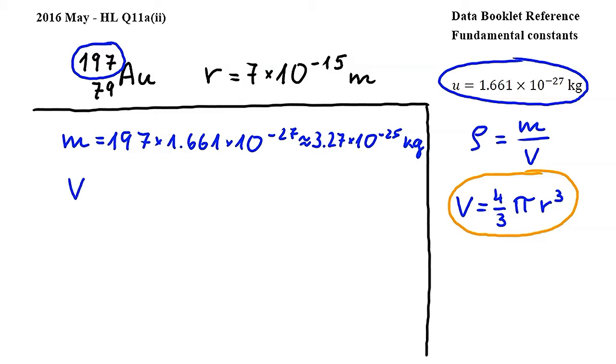Substituting we get V is equal to 4 over 3 times pi times 7 times 10 to the power of negative 15 cubed. Carrying out this calculation and rounding, we get approximately 1.44 times 10 to the power of negative 42 meters cubed.